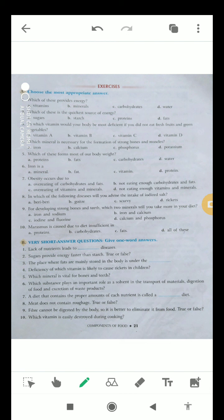Question number six, iron is a mineral. Next, question number seven, obesity occurs due to: the options are overeating, overeating of carbohydrates and fats, not eating enough carbohydrates and fats, overeating of vitamins and minerals, not eating enough vitamins and minerals. So the correct option is A, overeating of carbohydrates and fats.